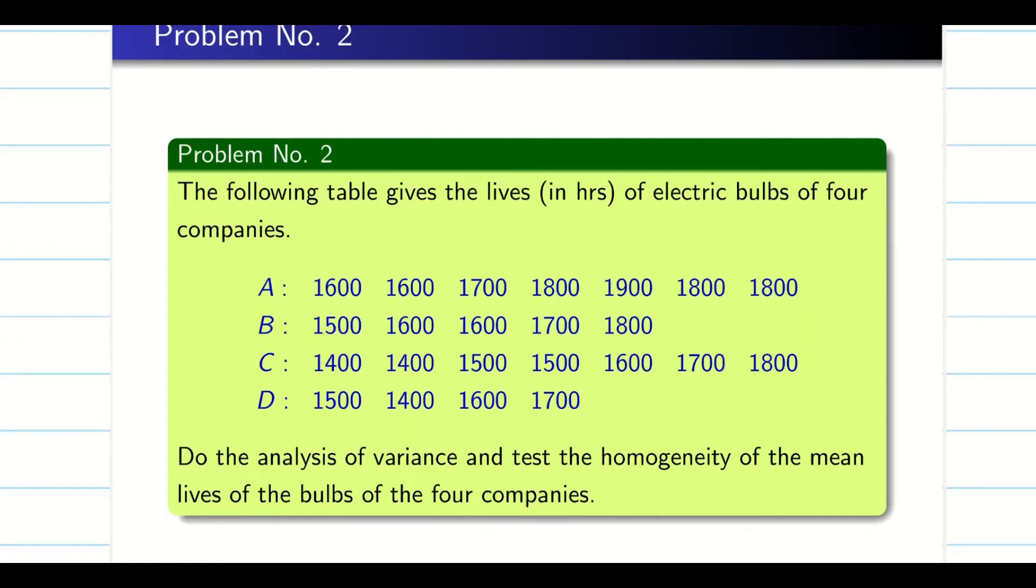The table gives electric bulbs of 4 different companies. Very important: the data is given in horizontal way, but when we form the table, we always go for vertical A, B, C, D, where we keep it as X1, X2, X3, X4, etc. So we have to write it vertically. Now we have to analyze the variance and test the homogeneity of mean bulbs of the 4 companies, whether we are going to say they are same or they are different.